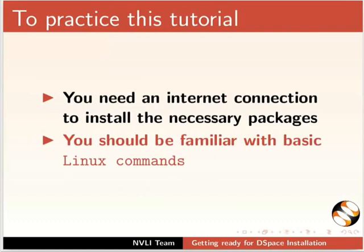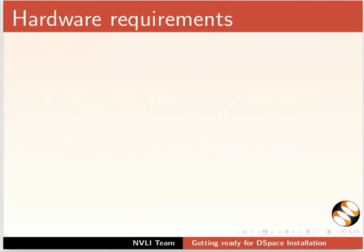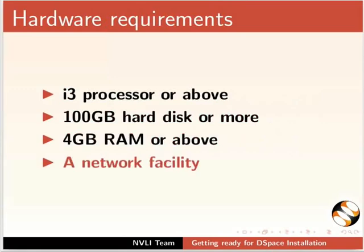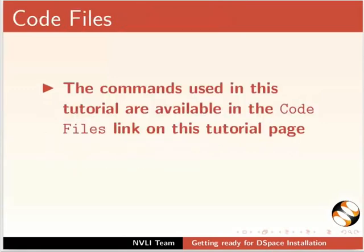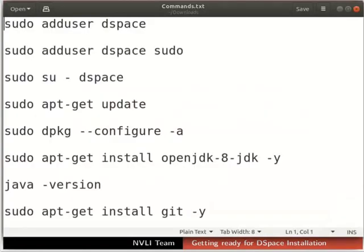You should be familiar with basic Linux commands. If not, please go through the prerequisite Linux tutorials on this website. The minimum hardware requirements for DSpace installation are an i3 processor or above, 100 GB hard disk or more, 4 GB RAM or above, and a network facility. The commands used in this tutorial are available in the code files link on this tutorial page. Please download and extract the file before practicing. I have opened the code file in the gedit text editor on my machine, and I will use the same file to copy-paste the commands during the demonstration.